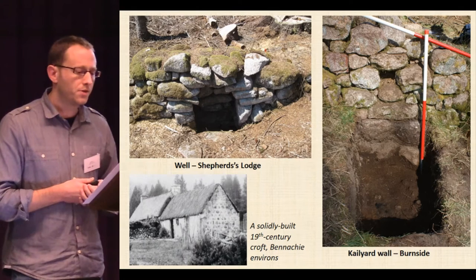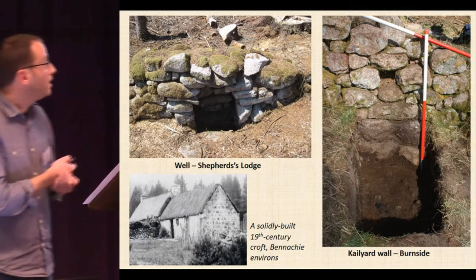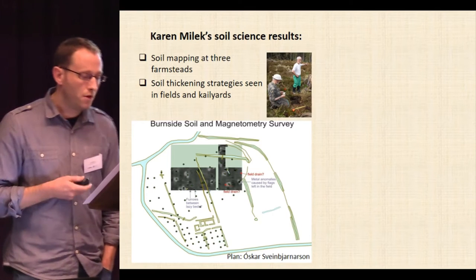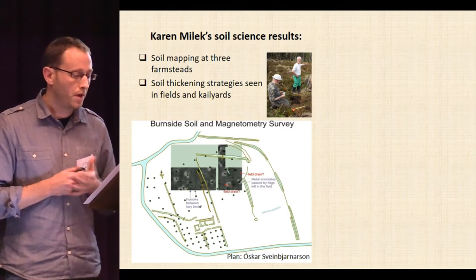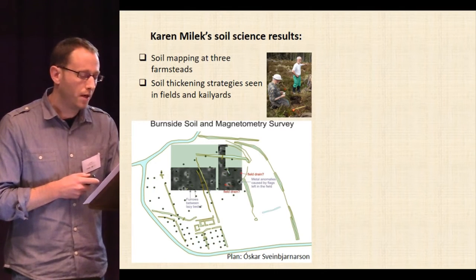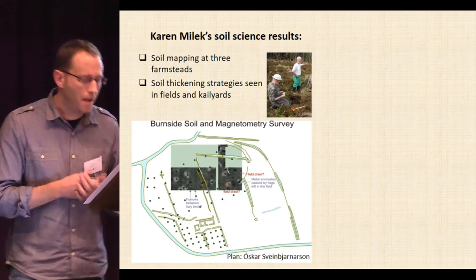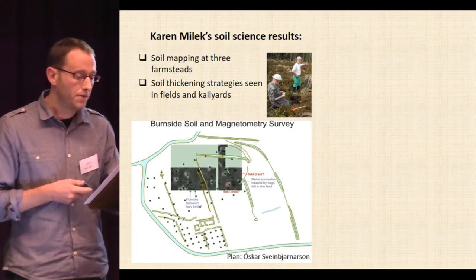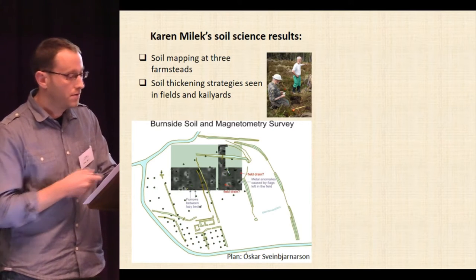The built environment can only really tell us so much, so to get a better handle on whether the colonists were improving their fields, we've also turned to archaeological science techniques. My colleague Karen Millick has been invaluable here. Karen, along with students and our collaborators the Baileys of Benahy, recently carried out soil sampling at three different farmsteads — Shepherd's Lodge, Hillside, and Burnside. These locations are starting to reveal a story of anthropogenic inputs to the colony environment that begin to contradict some of the accounts about the apparent backwardness of the colonists. We've dug test pits across kale yards — effectively kitchen gardens — across fields, and also on unimproved land on the outskirts of the colony, and this has demonstrated really marked differences in soil types.